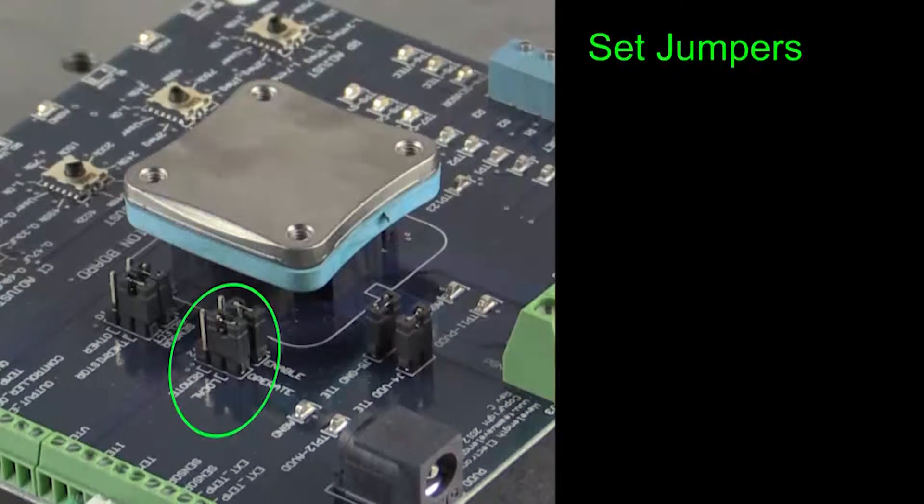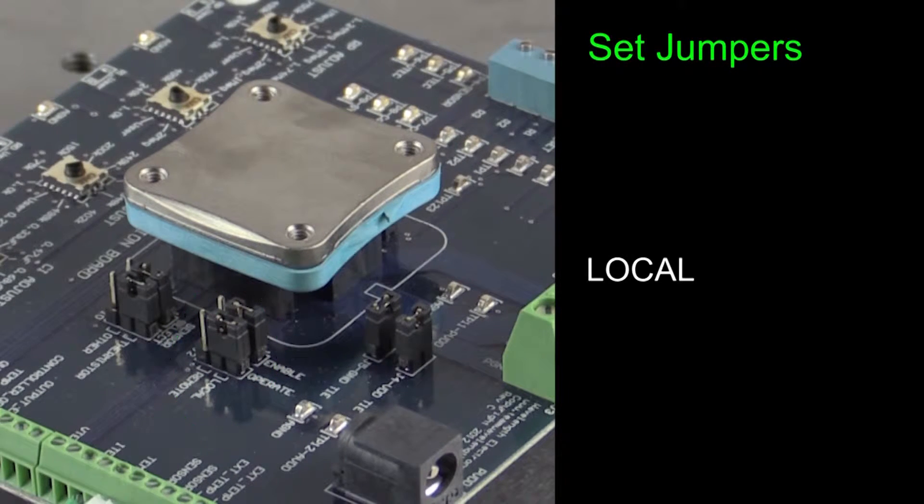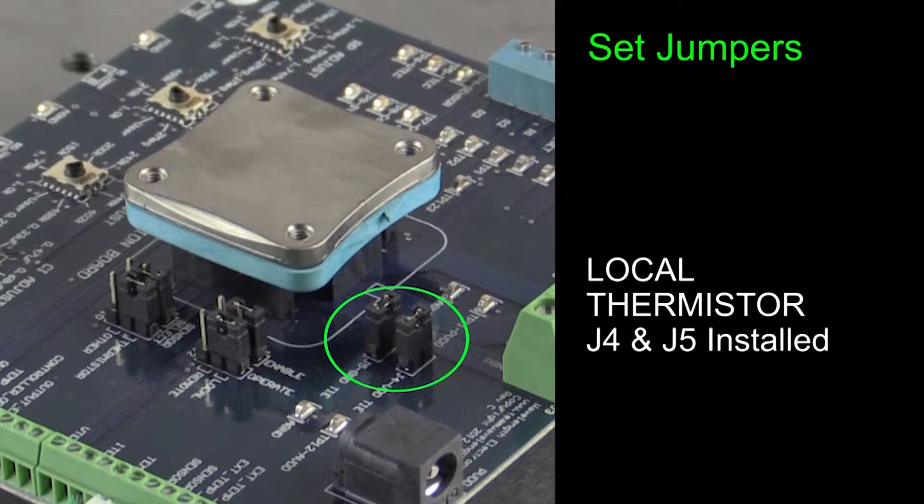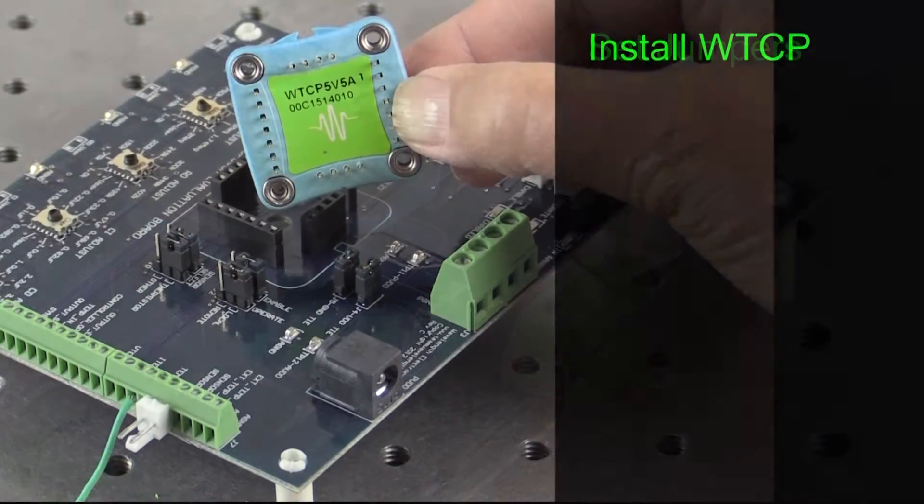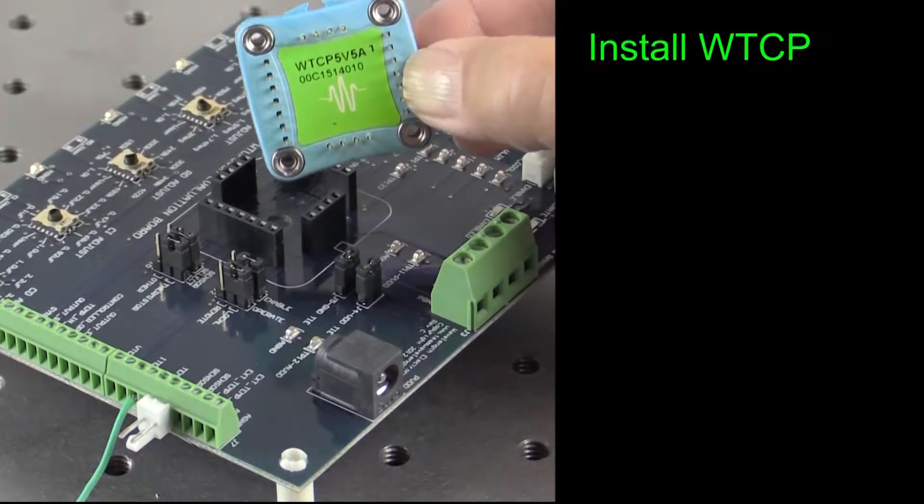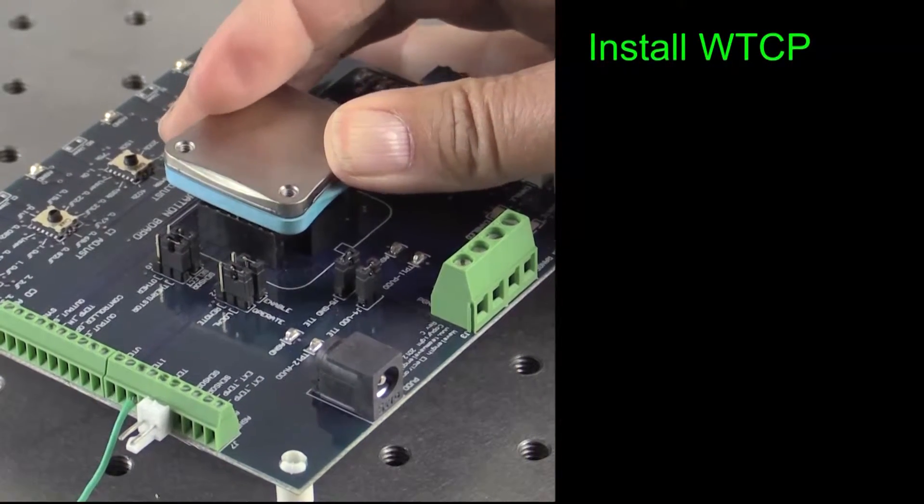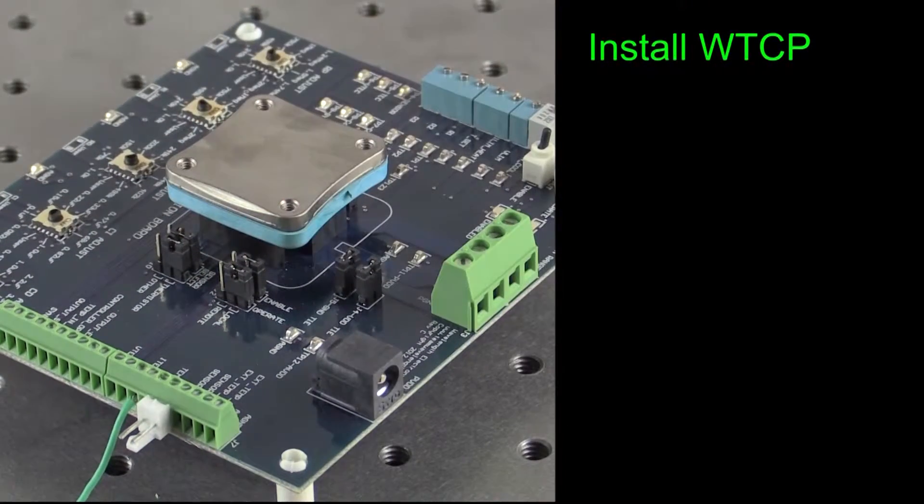Move two jumpers to the local position and two jumpers to the thermistor position. Make sure J4 and J5 are installed. Install the WTCP on the evaluation board observing ESD precautions. Note the notch on the silkscreen matches up with the wings of the WTCP.